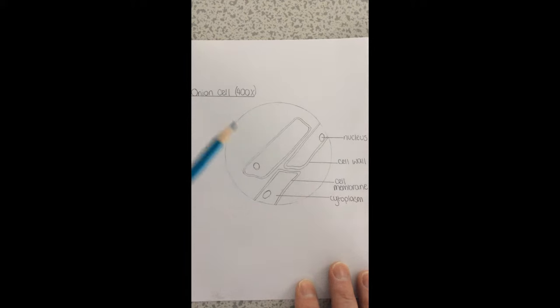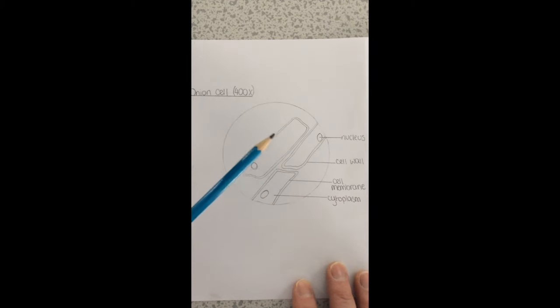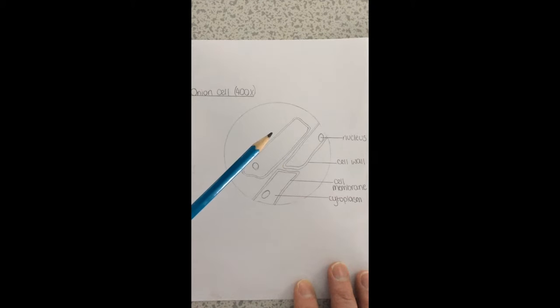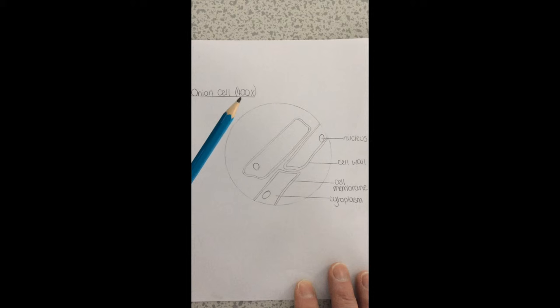Here is my microscope drawing, my scientific label drawing of the onion cell that I viewed under the light microscope. And you can see I've identified and labelled the cell features that I could see. So you've got the nucleus, the cell wall, the cell membrane, and the cytoplasm. And the total magnification was times 400.